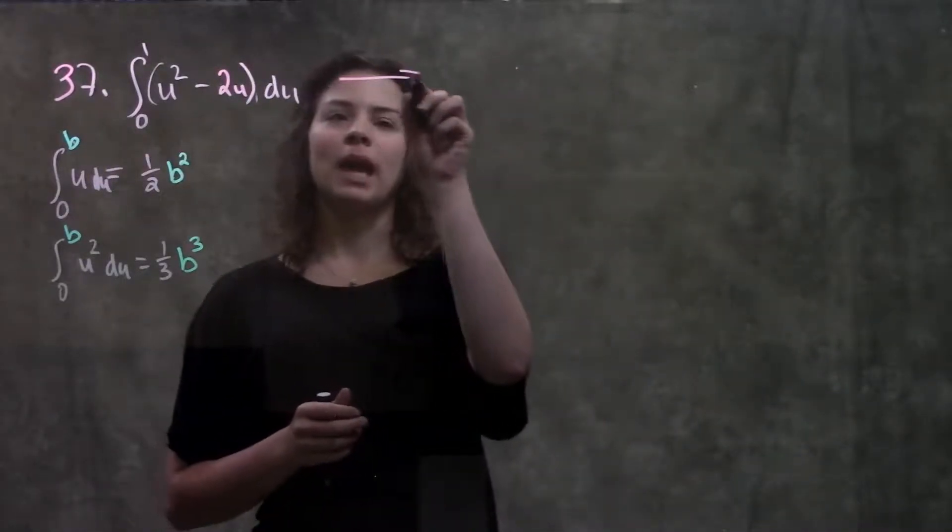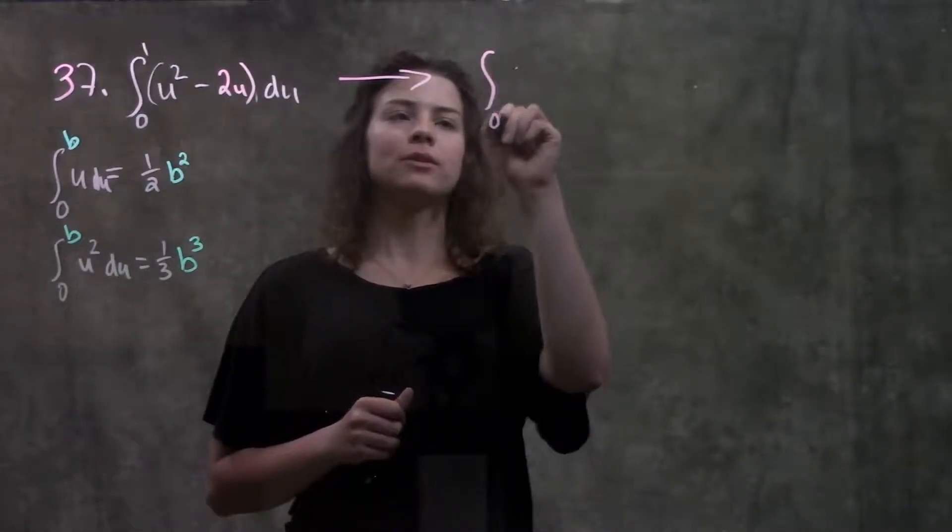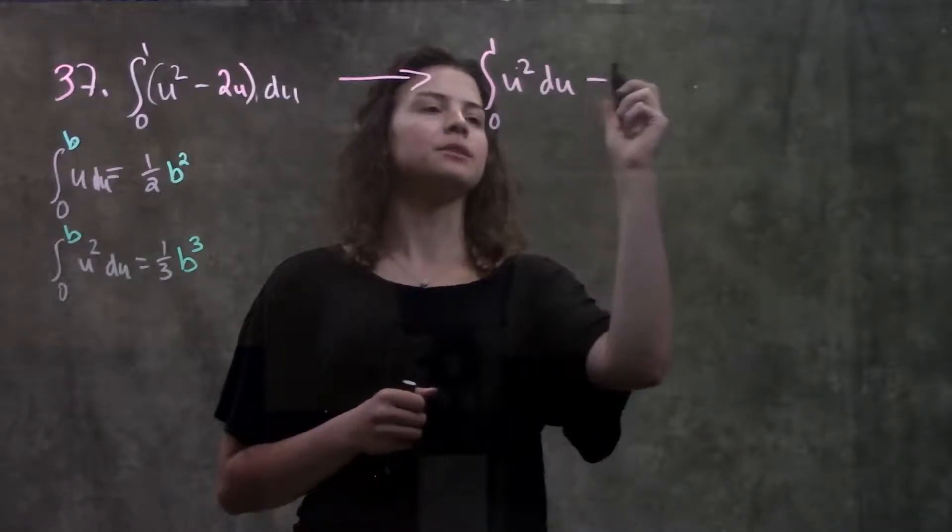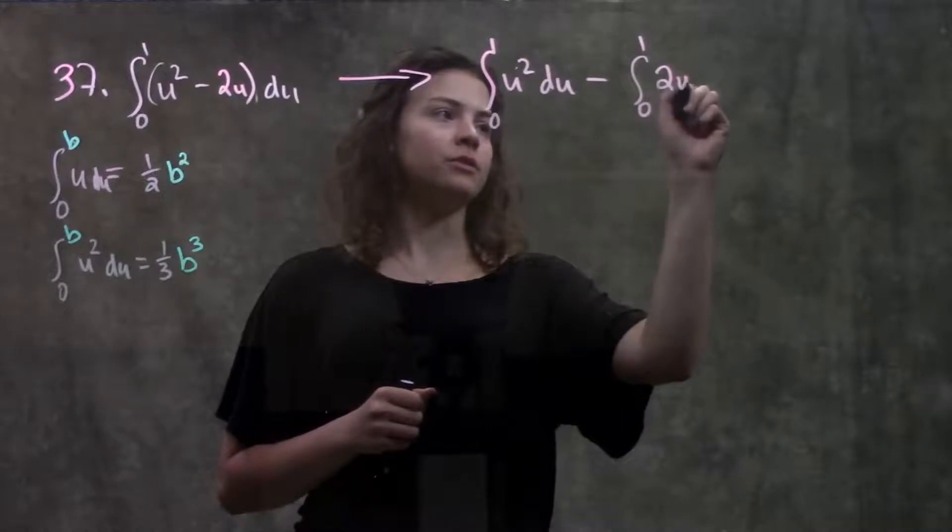So let's go ahead and go through this. If you remember, one of our properties told us that we can separate this out into two integrals that are being subtracted. So this becomes u squared minus the integral from 0 to 1 of 2u du.